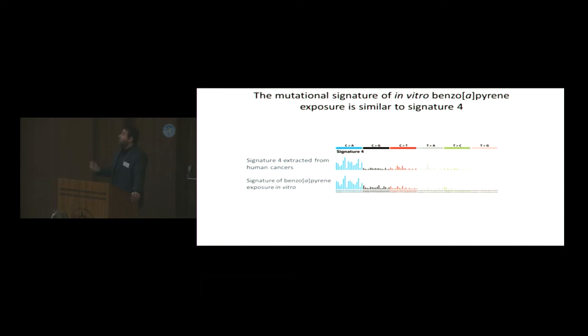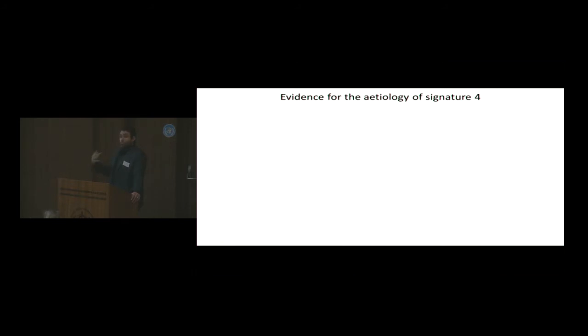What you see below is the signature of benzoapirin exposure in vitro in mouse embryonic fibroblasts. If you just visually look at them, they look very similar. You can quantify it. You can say that they have 95, 96 percent similarity. But that gives us confidence to assign an etiology.